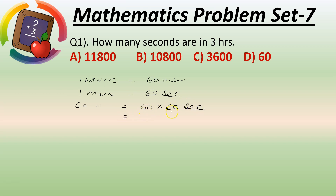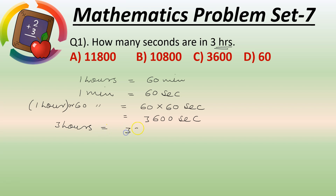60 into 60 equals 6 into 6 which is 36, and with two zeros that's 3600. So 60 minutes means one hour. One hour equals 3600 seconds. Now in the question we have 3 hours, so 3 hours equals 3600 into 3 seconds.